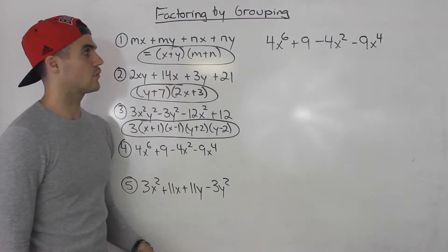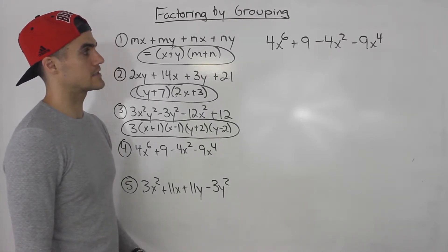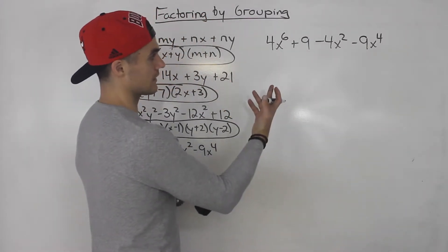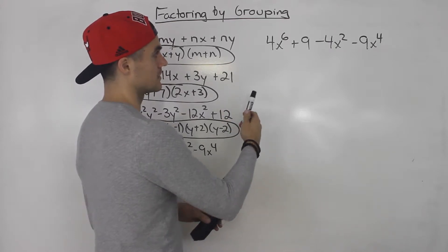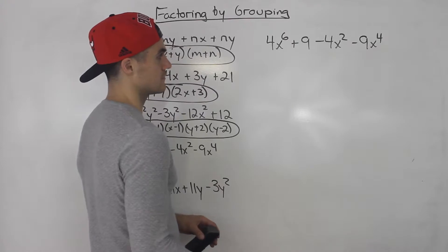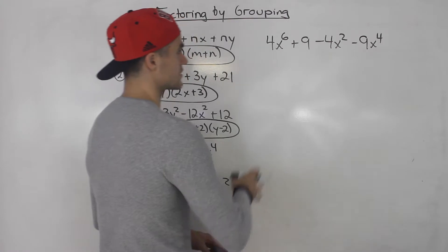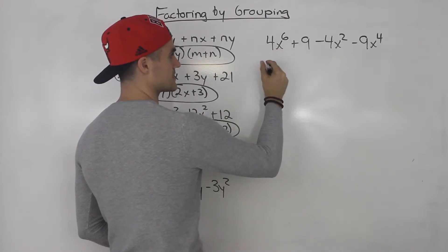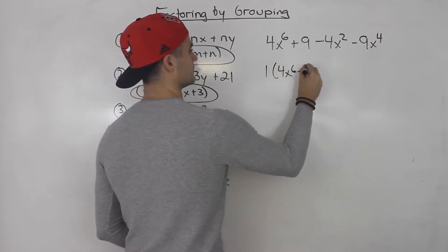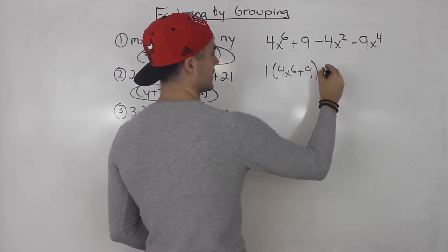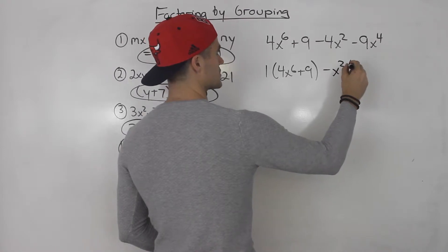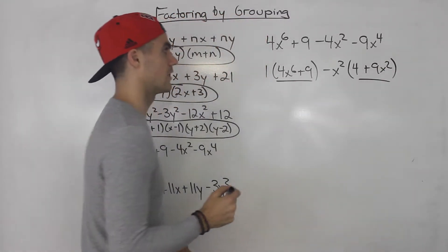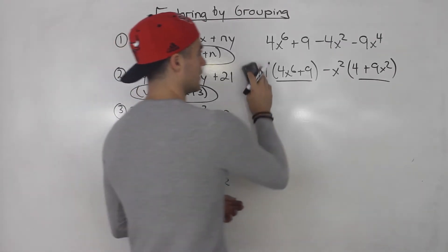Now question 4, rewritten up here: we got 4x to the 6 plus 9 minus 4x squared minus 9x to the 4. First thing we check — can we take anything out of all expressions? We can't because the 9 doesn't contain an x variable, and there's no greatest common factor between 4 and 9. If we try grouping as given, we can't really take anything out of 4x to the 6 plus 9. We could take out a minus x squared from the last two, but then the two brackets are not the same, so that doesn't work.